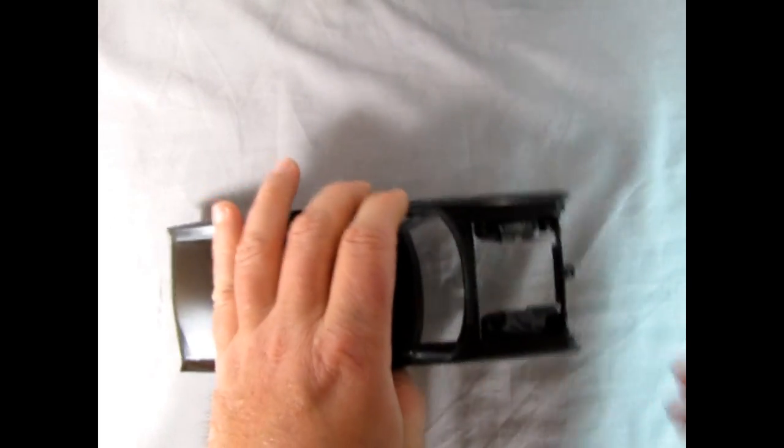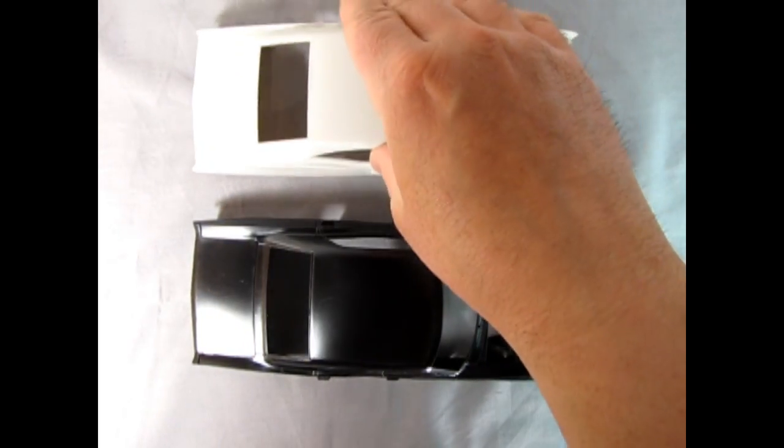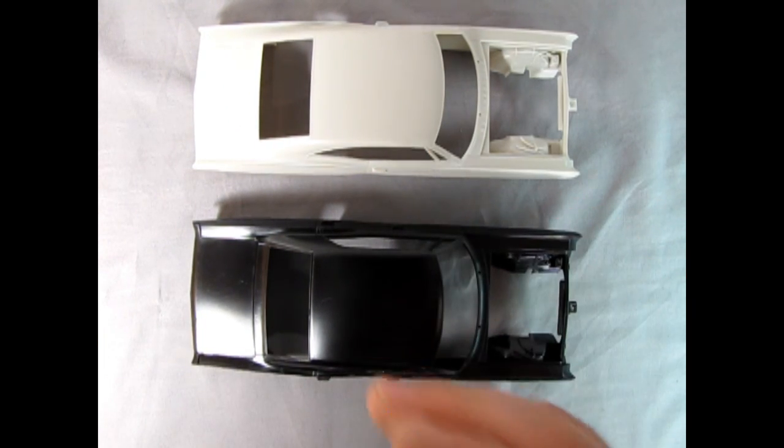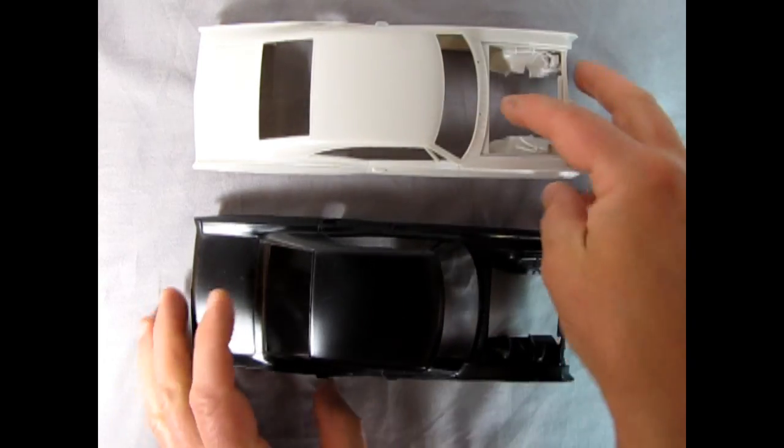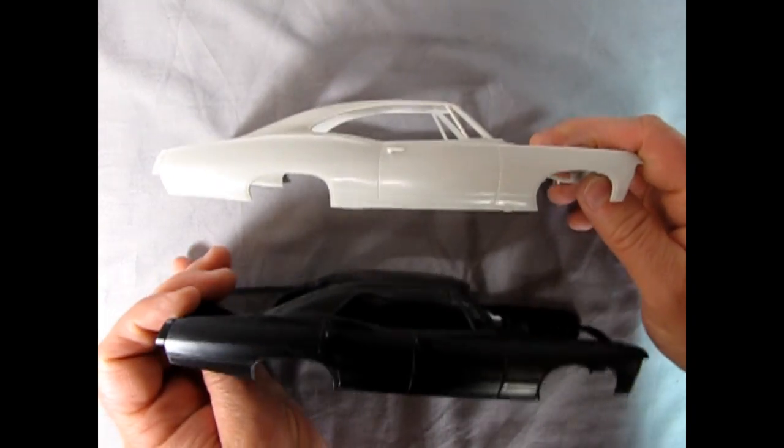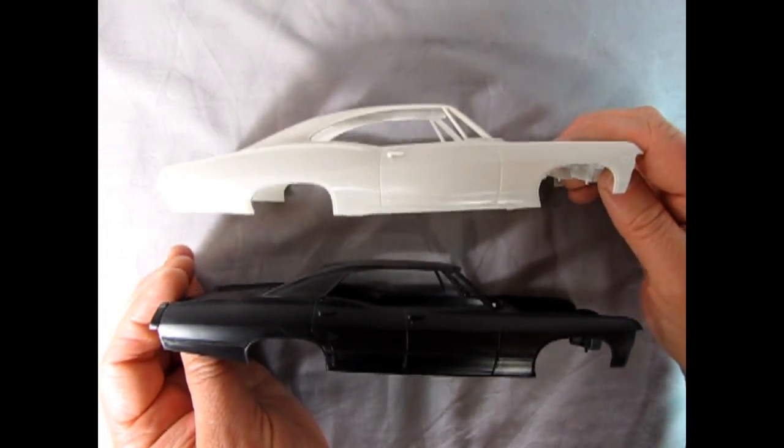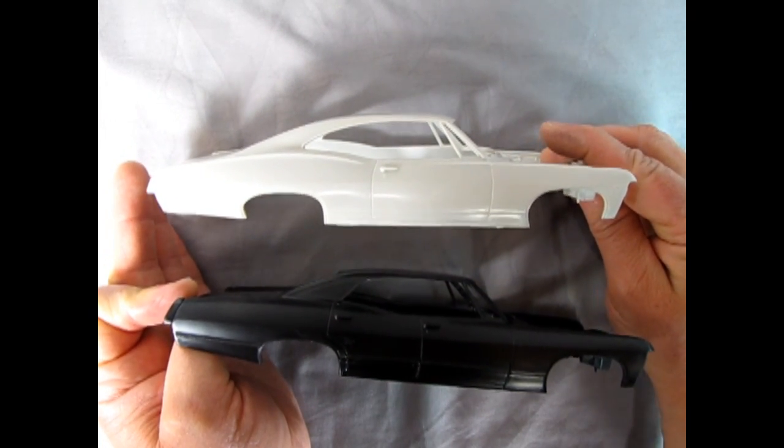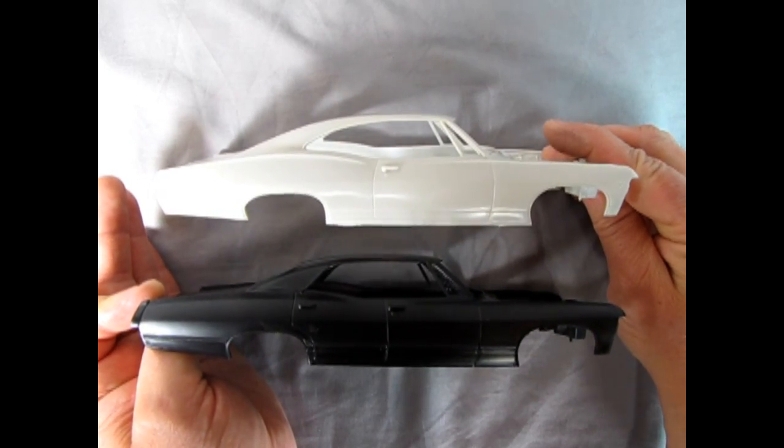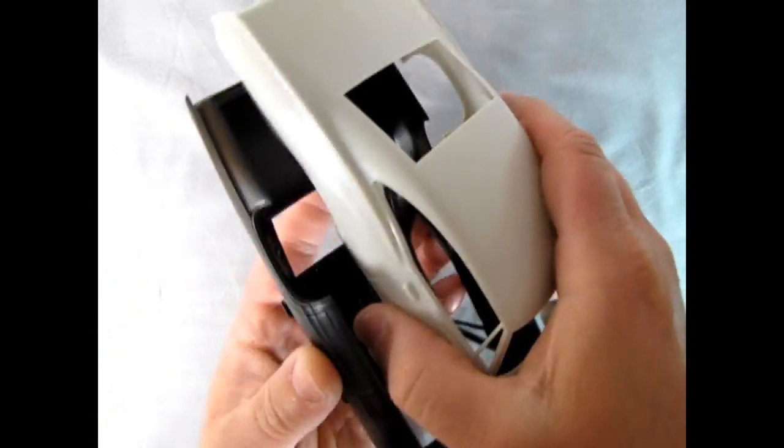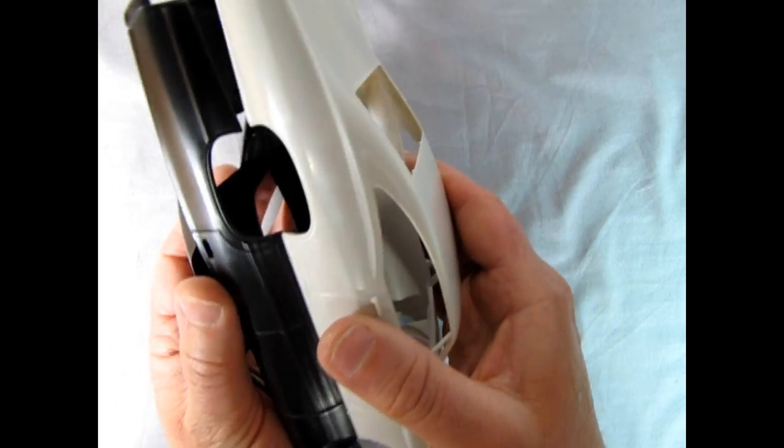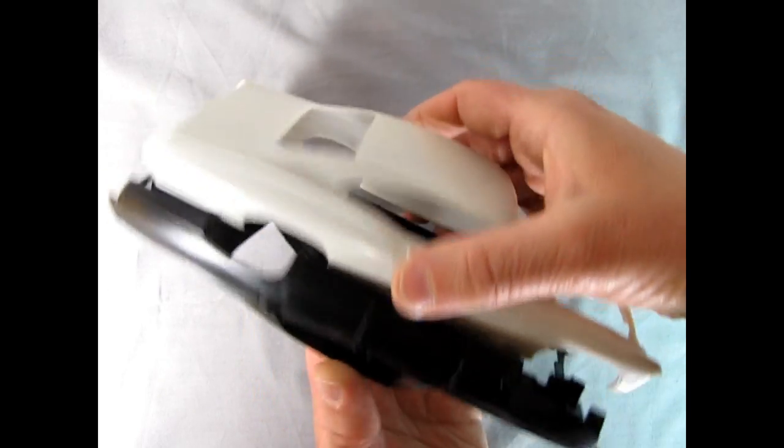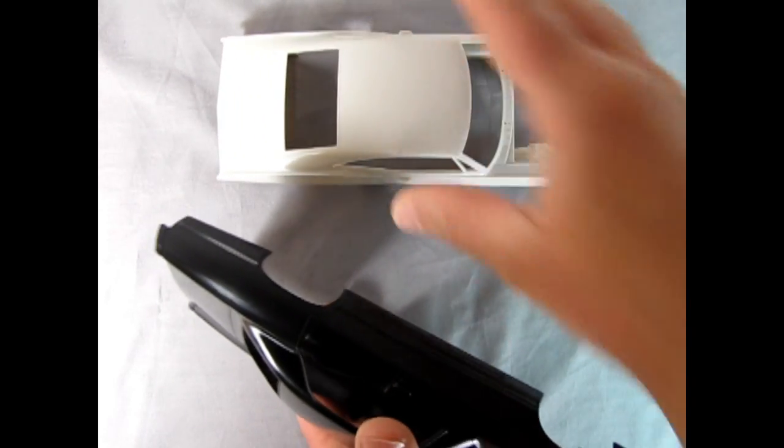So one thing I'm going to bring into frame right now is the original Impala kit and you can see quite a difference. First off this is molded in black plastic, this one is molded in light gray but if we take both on the side you can see the difference in the roof panel. So there is the difference in the roof panel as well as the four doors but lengthwise if we take these and compare them they are in fact the same length of car. So that I found to be really interesting.